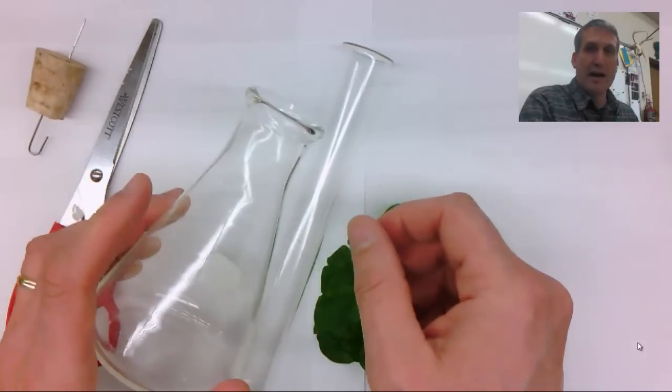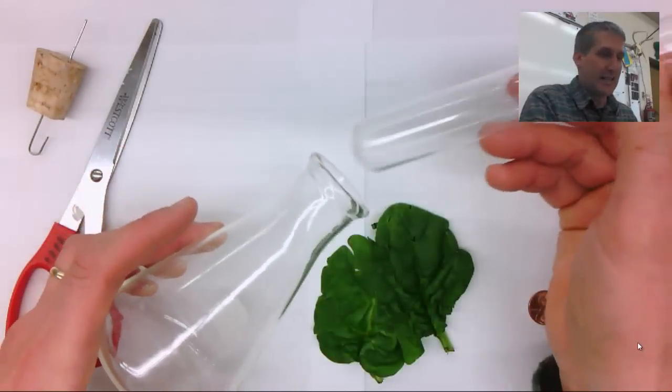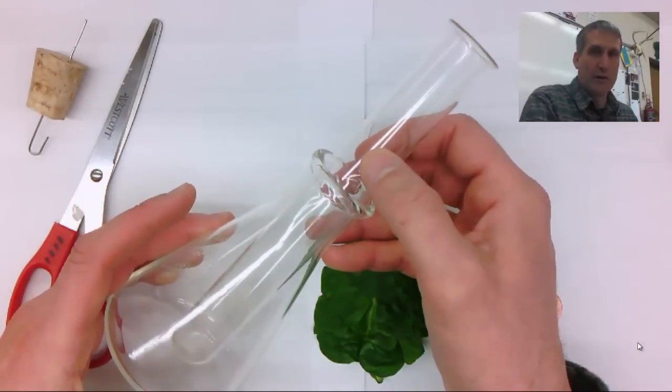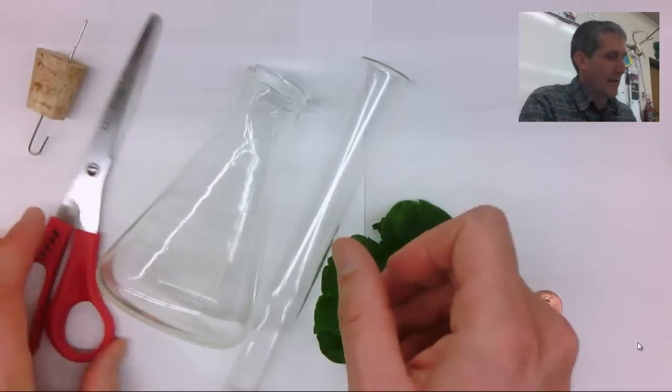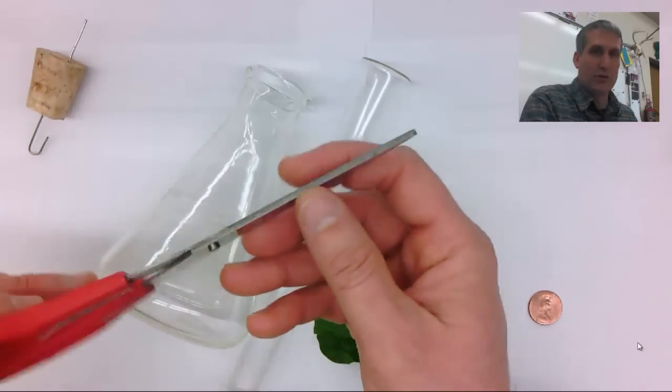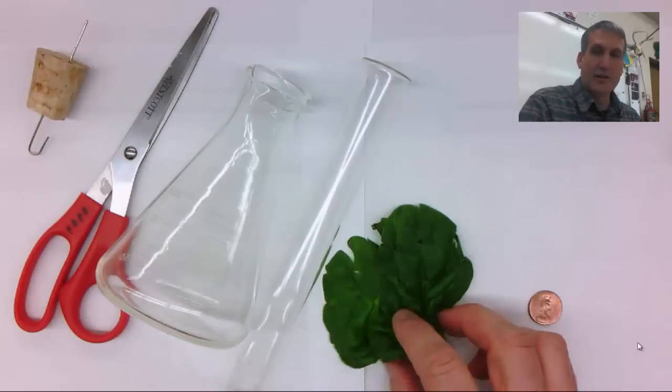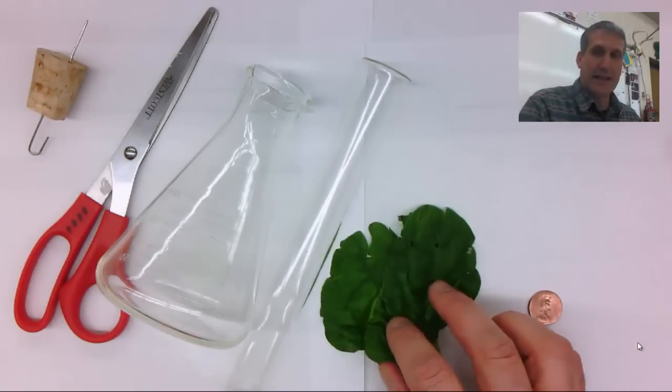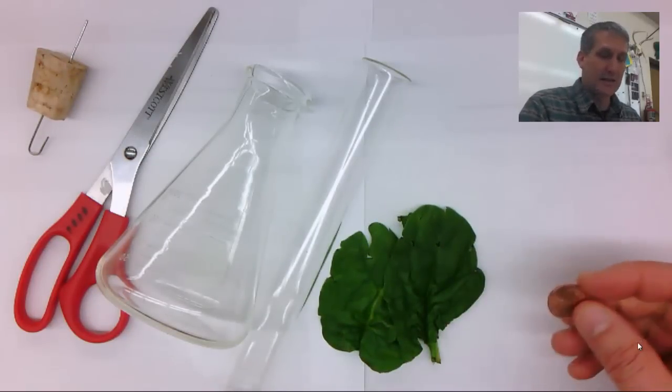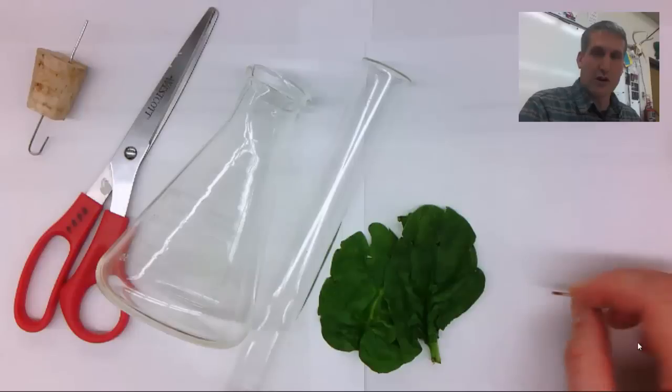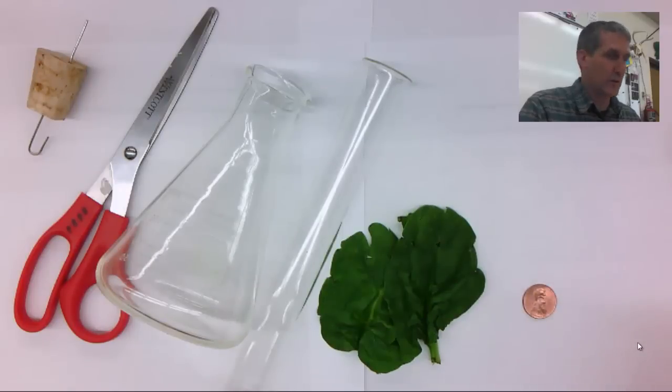You'll need an Erlenmeyer flask which we'll be using as a test tube holder. You'll need a pair of scissors to cut a point in the chromatography paper. And you'll also need spinach leaves and some type of coin to crush the pigment into the chromatography paper.